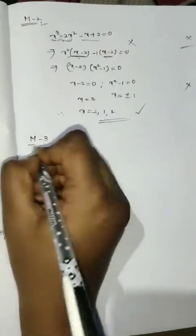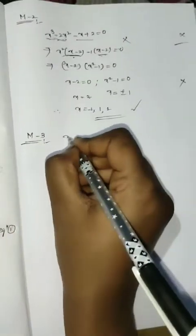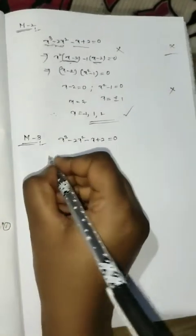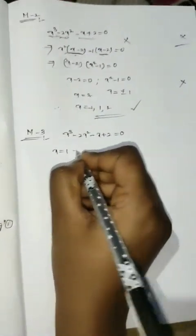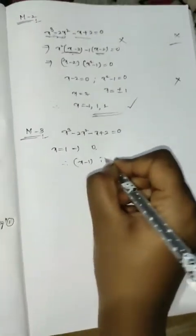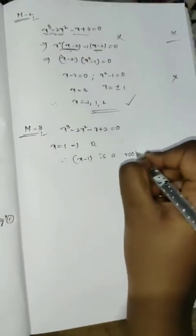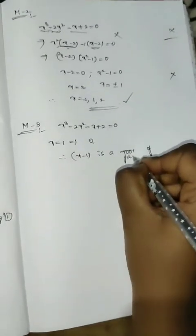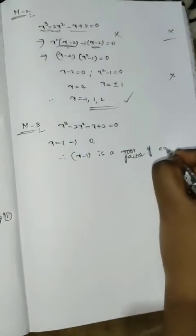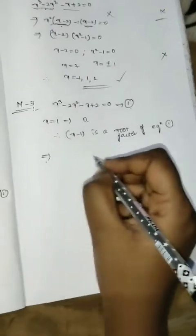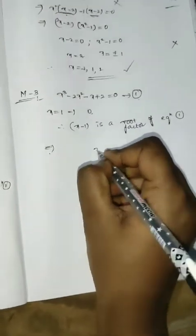Method 3: Same equation x cubed minus 2x squared minus x plus 2 equals 0. Substituting x equals 1 gives 0, so x minus 1 is a factor of the equation. We use the division method, dividing x cubed minus 2x squared minus x plus 2 by x minus 1.